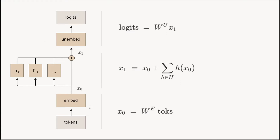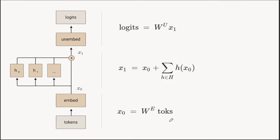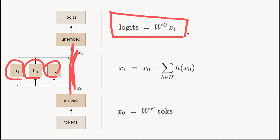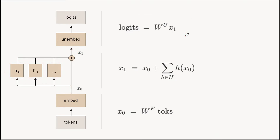If we want to talk about an attention-only transformer, there are three steps at a very high level. First, we embed our tokens: we represent tokens as one-hot vectors and multiply them by the embedding matrix. Then, for each attention head, we run the attention head and add it into the residual stream — that line down the middle. Finally, we multiply by the un-embedding matrix to get the logits, which is the output of our model.